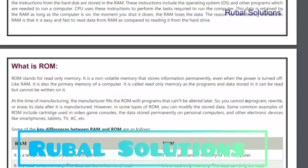Some common examples of ROM include cartridges used in video game consoles, the data stored permanently on personal computers and other electronic devices like smartphones, tablets, TV, AC, etc.